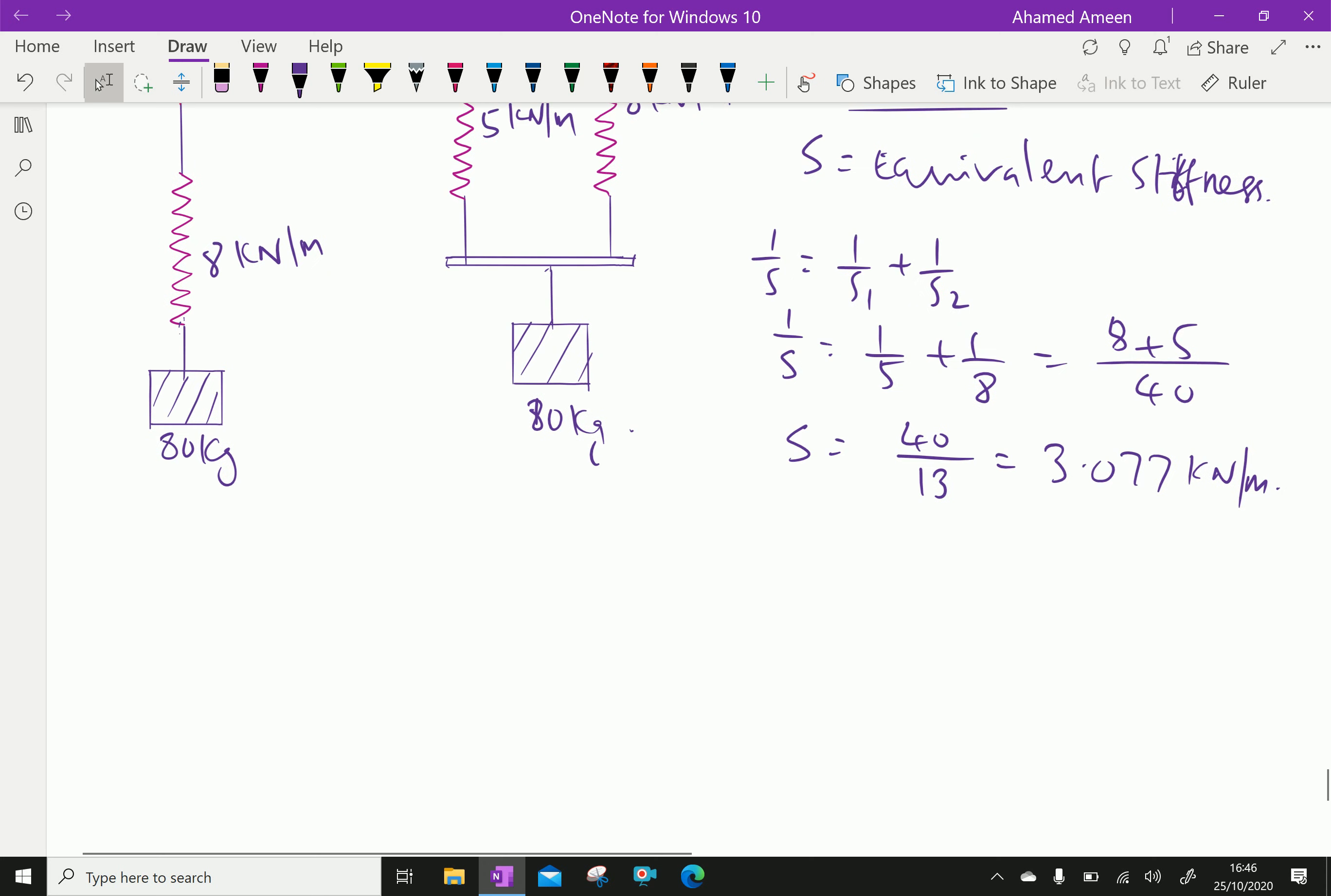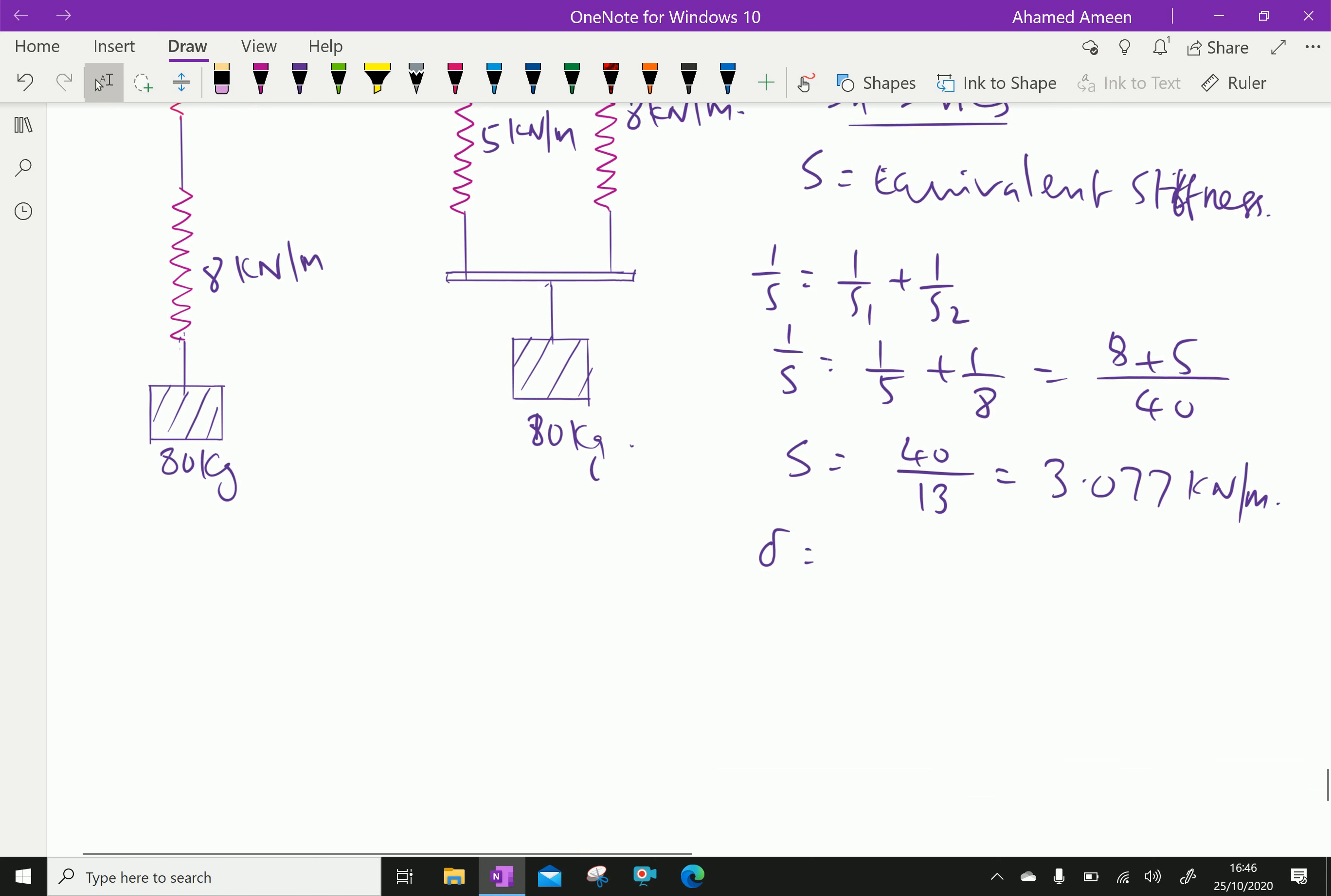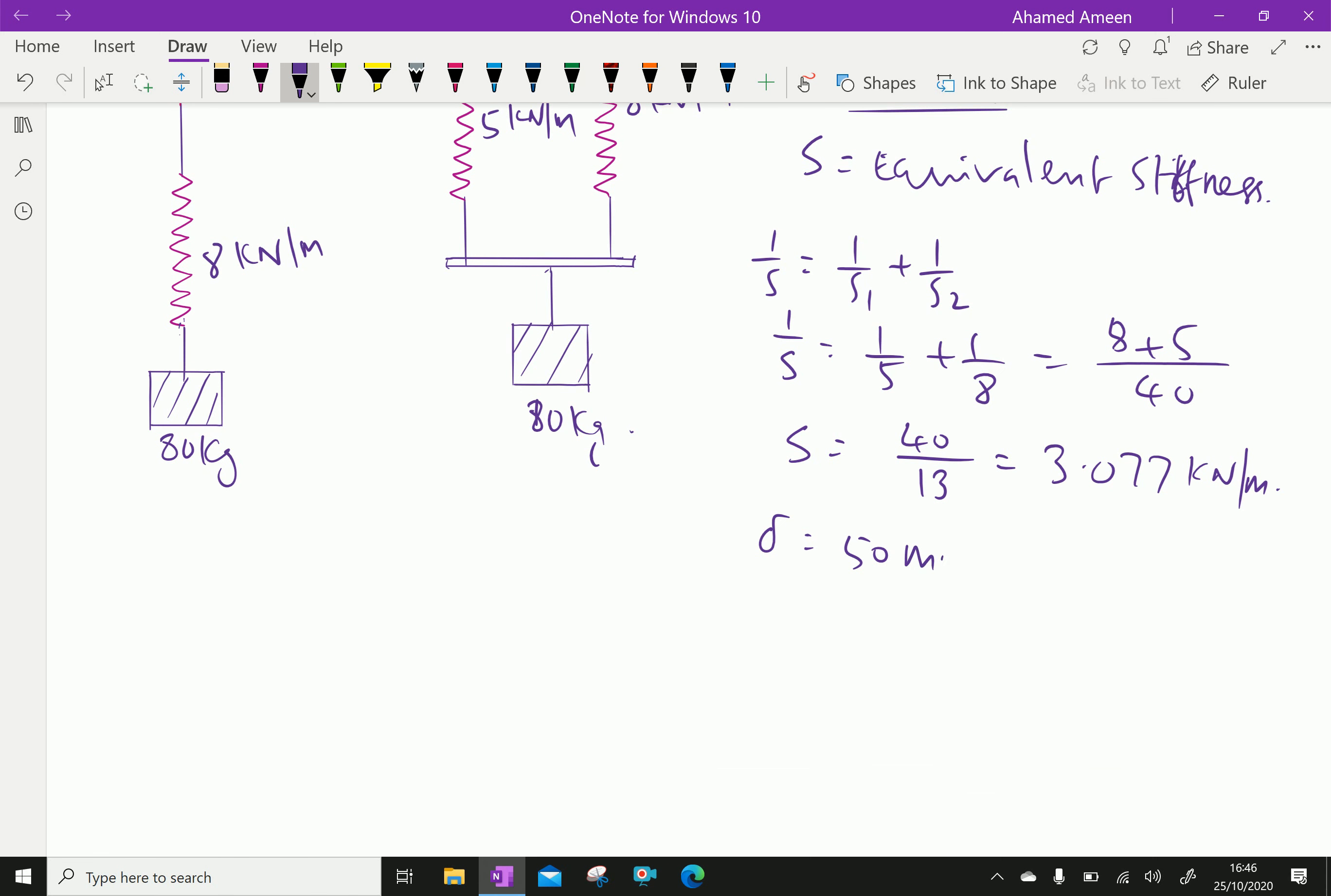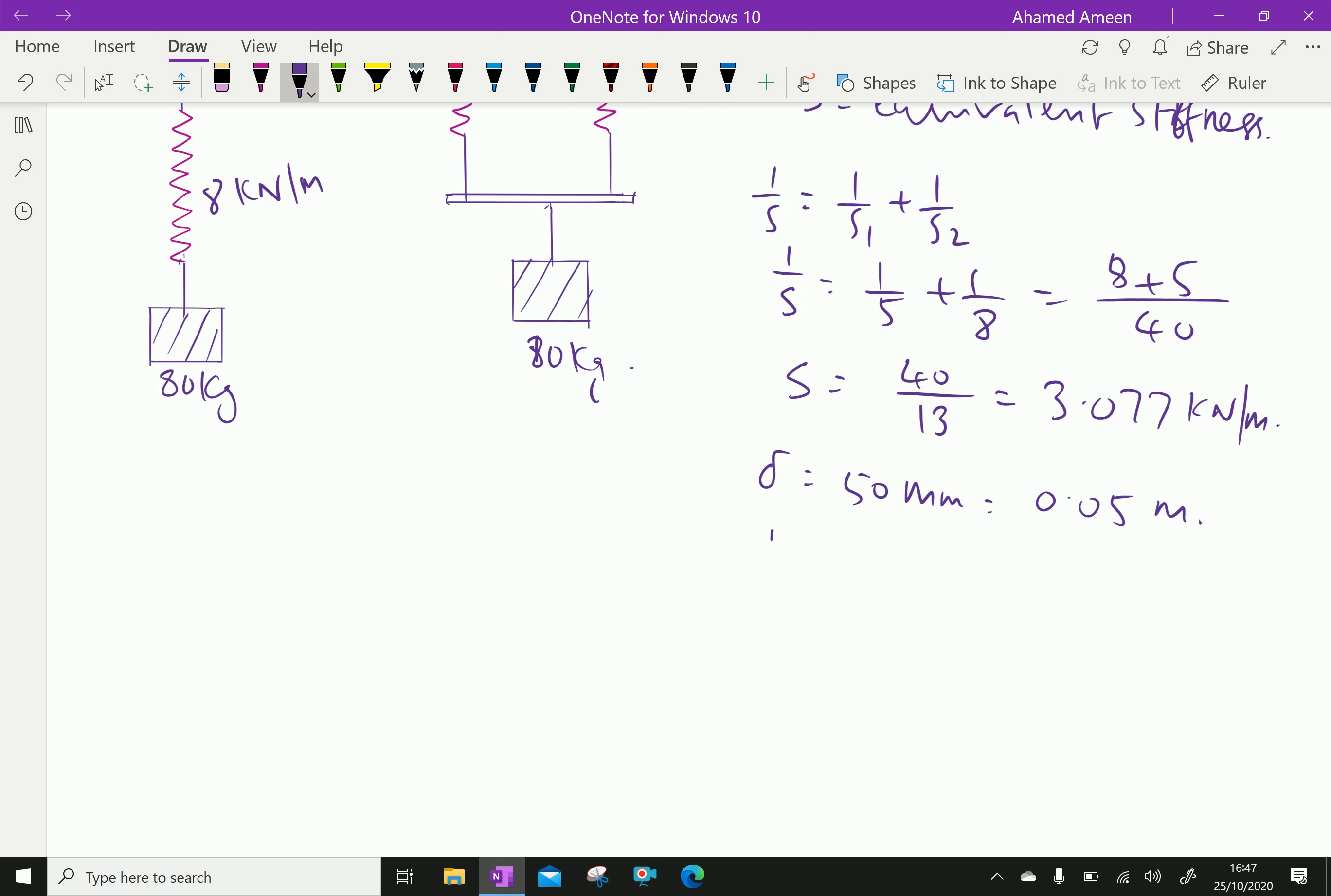Delta equal 50 mm, which is equal 0.05 meter. And mass equal 80 kg, which is 0.08 tons.